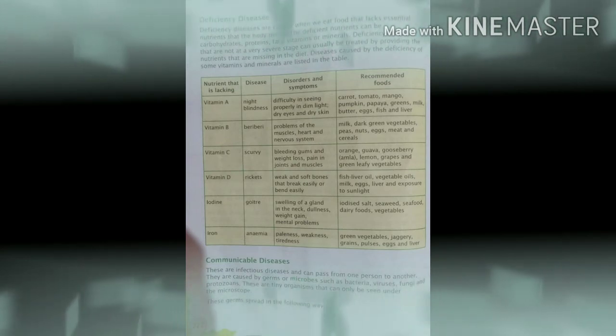First of all, nutrients that is lacking diseases, disorders and symptoms, then recommended foods. Number one is vitamin A. What kind of disease can we see? Night blindness. Then disorders and symptoms are difficulty in seeing properly in dim light, dry eyes and dry skin. Recommended foods are carrot, tomato, mango, pumpkin, pepper, green leafy vegetables, milk, butter, eggs, fish and liver.